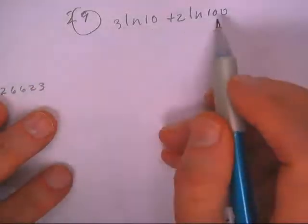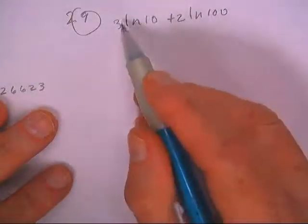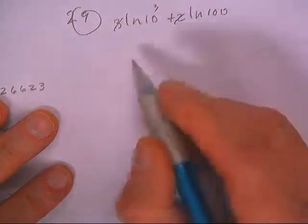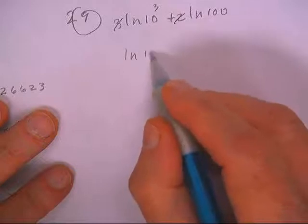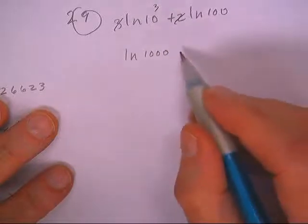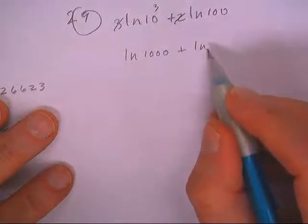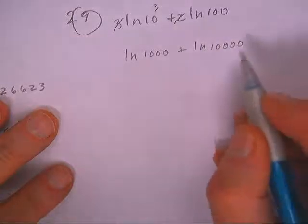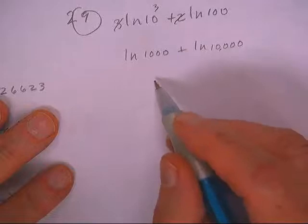Okay, they want us to write this as a single log so we probably ought to put the three and the two back up there like that. So then I get ln of 1000 plus ln of 10,000.